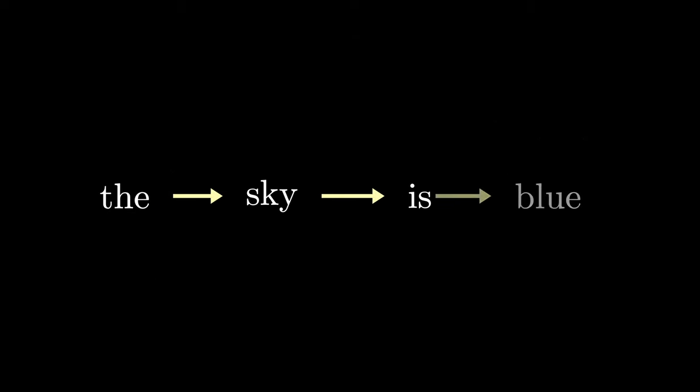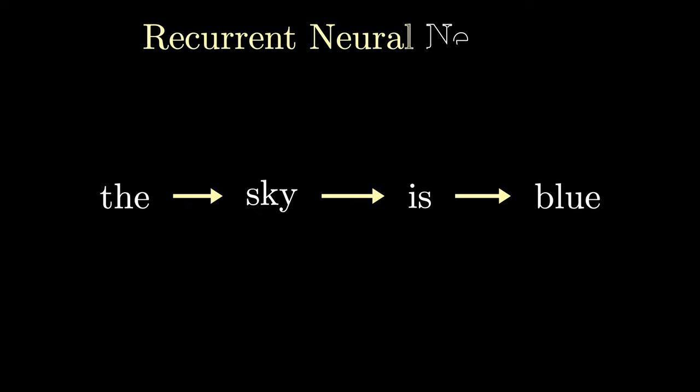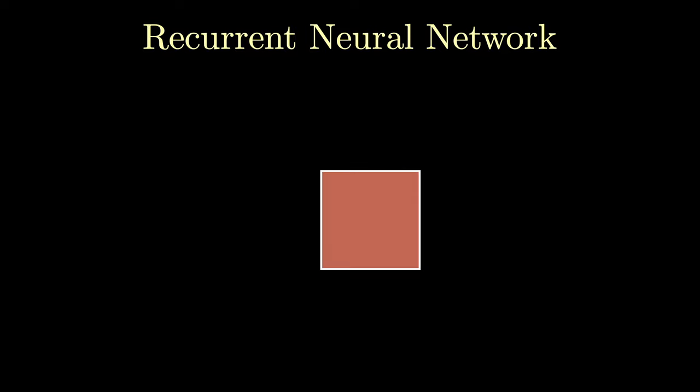Language is inherently sequential. Words in a sentence follow each other in a specific order, and the meaning of a sentence depends on this order. In other words, a given word's interpretation depends on all the previous words behind it. The mathematical word for this is called recurrence. Let's see if we can design a recurrent neural network. I'll start by creating what I'll call an RNN cell.